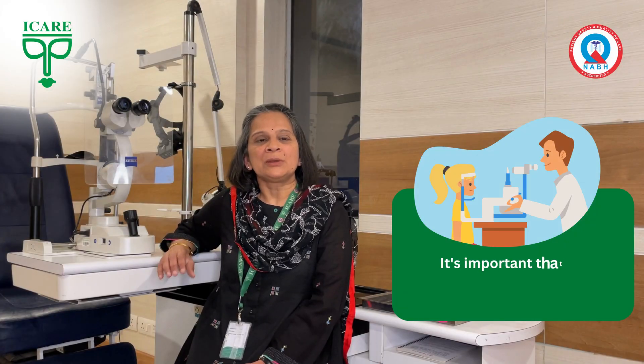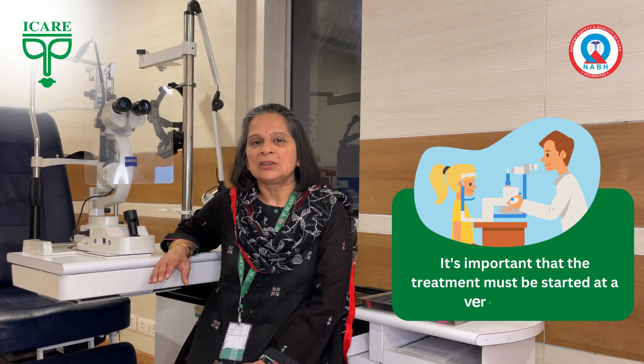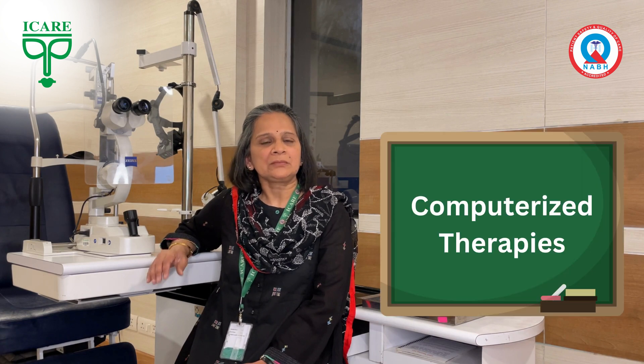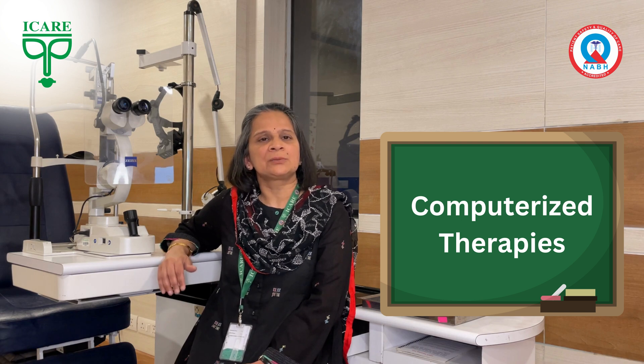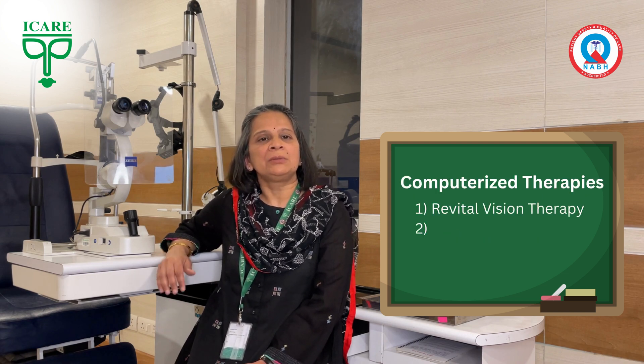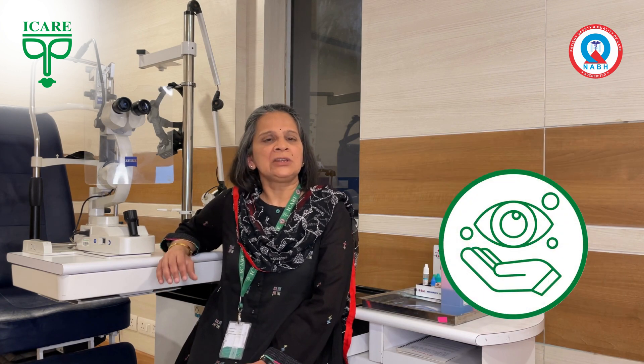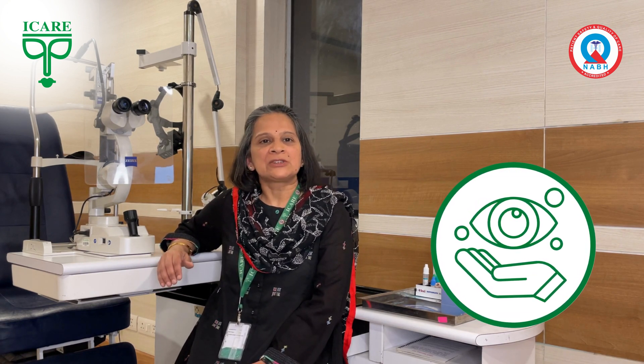It is important to remember that this treatment needs to start at a very early age. Before 7 years of age, it is possible to improve lazy eyes really very well. After 7 years of age, the success of treatment starts going down with each passing year. However, in recent times, we have got a lot of computerized therapies — like Revital Vision therapy, Binox Vision therapy, and also orthoptic therapy — in which we have seen improvement even in adults who have a lazy eye problem, though time will tell how feasible this will be.